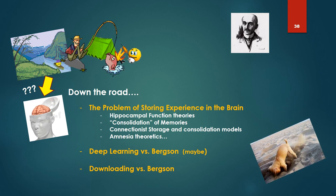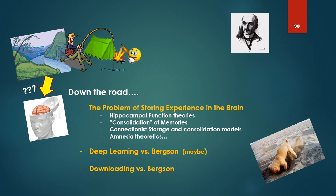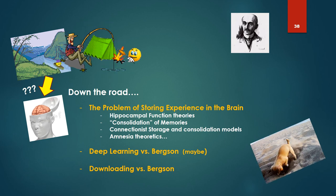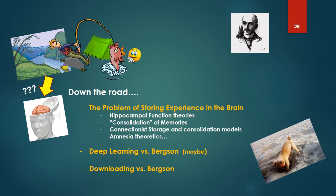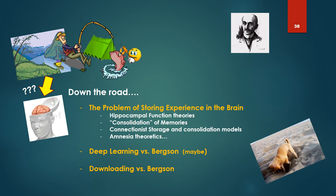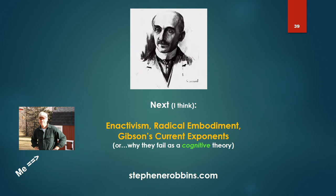And though I don't like just critiquing things, they all bring out aspects of Bergson's theory, which are, I think, quite illustrative. And next I think, I say I think, we'll look at enactivism, radical embodiment theories, some of Gibson's current exponents, and particularly simply why they fail as a cognitive theory. Till then, signing off.